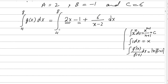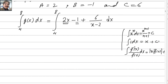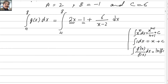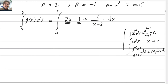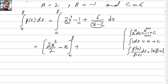Because this is a definite integral and limits are given, we do not write the constant c. C is only written when no limit is given. Applying the formulas: the integral of 2x gives 2x squared over 2, and the integral of minus 1 gives minus x, with limits from 4 to 8. For the last term, since the derivative of x minus 2 is 1, we keep 6 outside and write 1 over x minus 2 dx, with limits 4 to 8.